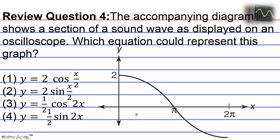Cosine waves usually pass through the absolute value of the amplitude. So this could have been negative 2 as well, depending on whether or not there's a phase shift. The amplitude is the distance from the center line to the maximum value, and here we see that it's 2. So we keep in mind that the amplitude has a value of 2.